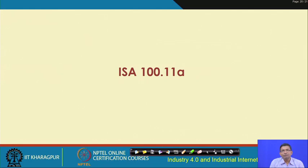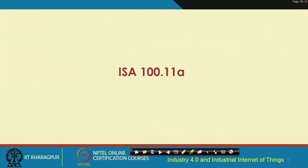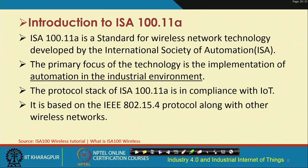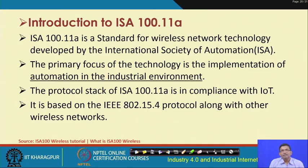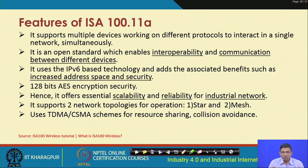Another very interesting and popular standard is the ISA 100.11a, which belongs to the ISA 100.11 series. This is a standard for wireless network technology developed by the International Society for Automation (ISA). It primarily focuses on automation in industrial environments and is based on 802.15.4, but is also attractive for IoT applications — both home-based and industrial IoT.